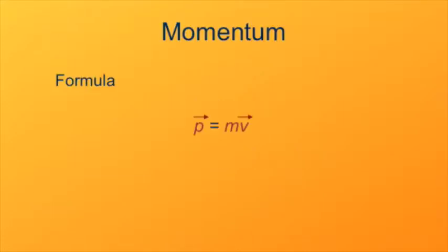Here's how it's defined. Momentum of something is its mass times its velocity. Momentum is a vector.